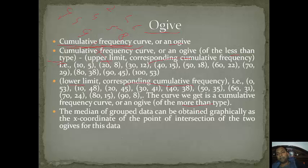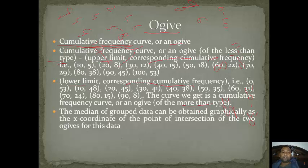I will explain by an example. Suppose data is given: 0 to 10 with frequency 6, 11 to 20 with frequency 18, 20 to 21 with frequency 24, and 21 to 25 and so on. When we plot the more than type, we take the lower limits: 0, 11, 21 and plot the corresponding cumulative frequencies. We get one type of curve for the more than type.